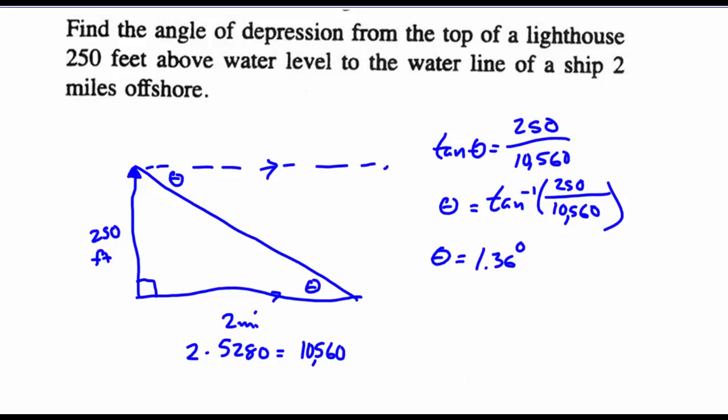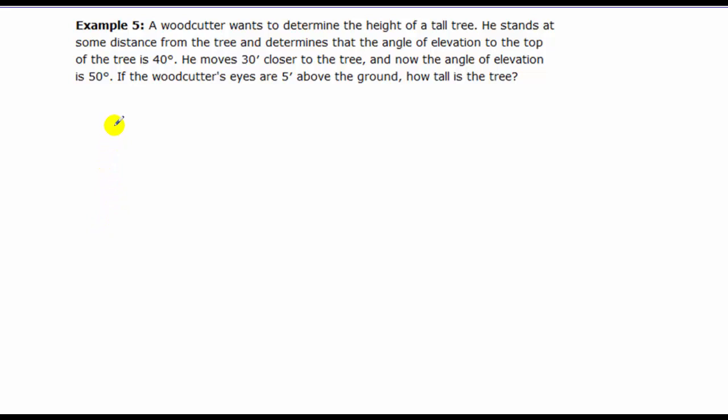Let's take a look at the next example. So we've got a woodcutter who wants to find the height of a tree. He stands a distance from the tree and measures the angle of elevation to be 40 degrees. Then he moves 30 feet closer, looks up again, and finds that the angle of elevation is now 50 degrees. And we want to find out the height of the tree. Well, we can do a couple of things here. I think probably the best thing to do would be to find some ratios for each of the two triangles made.